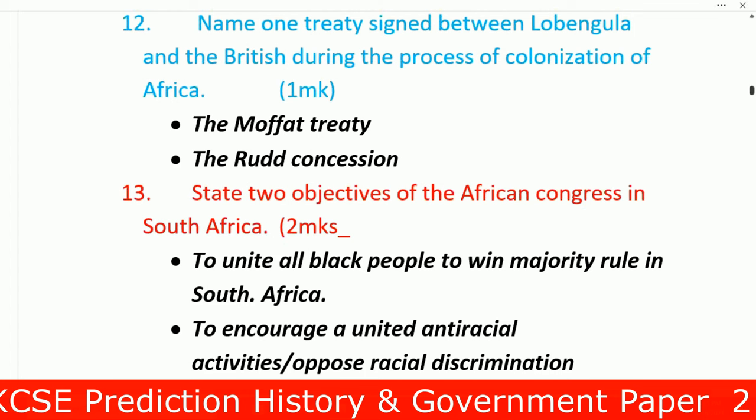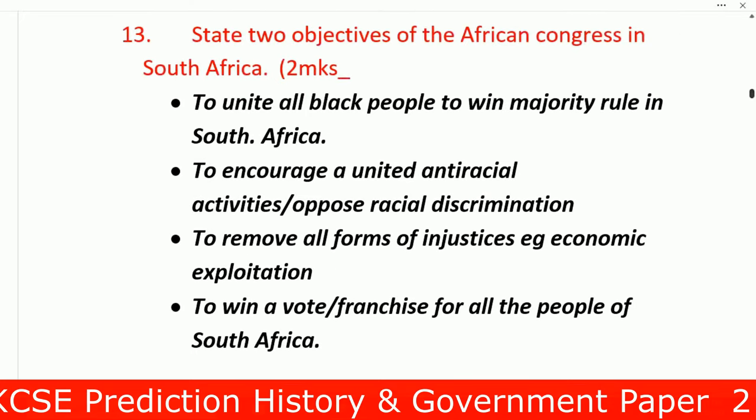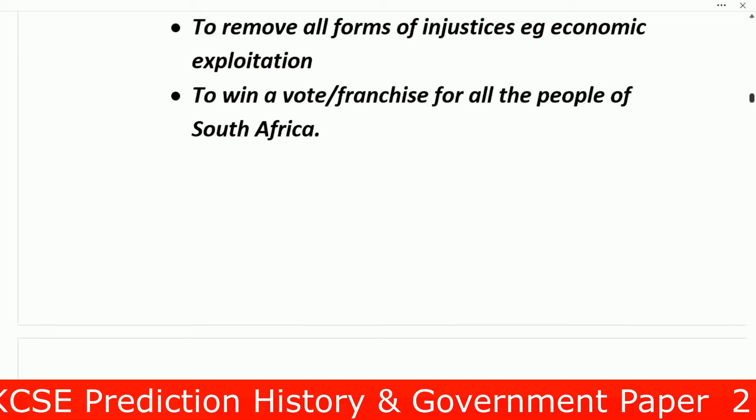Question 13: State two objectives of the African National Congress in South Africa. Number one: to unite all Black people and win majority rule in South Africa. Number two: to encourage united international activities and oppose racial discrimination. Number three: to remove all forms of injustices, such as economic exploitation. Number four: to win voting rights and franchise for all the people of South Africa.